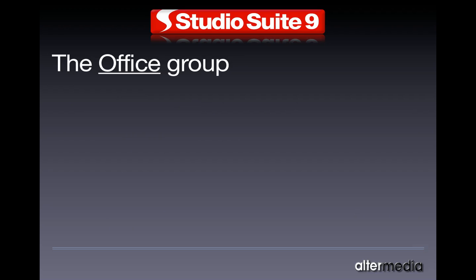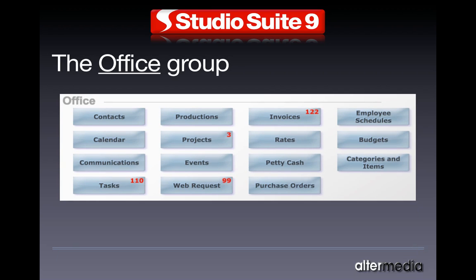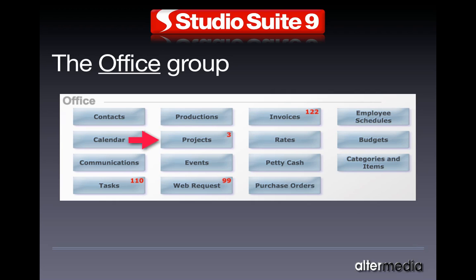The office group has 15 modules, starting with contacts, calendar, communications, tasks, productions — which is like a parent to multiple projects — and projects, and events, which are line items within a project.